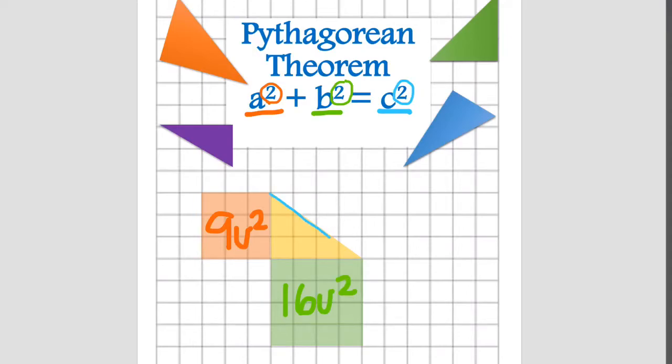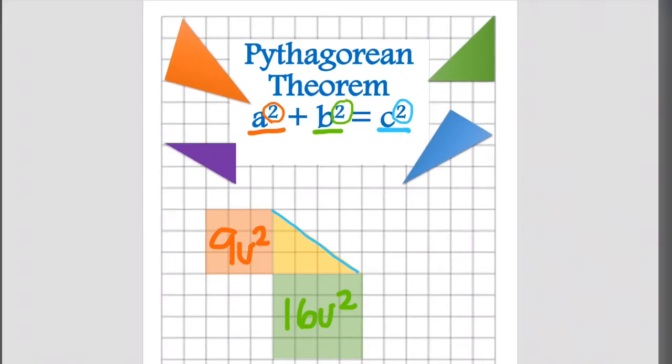But the question is, how do we find C, the diagonal side? We can't just count.